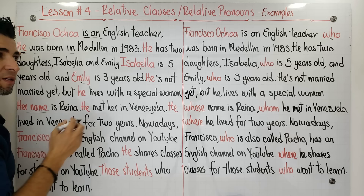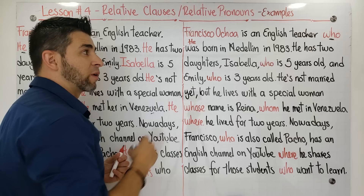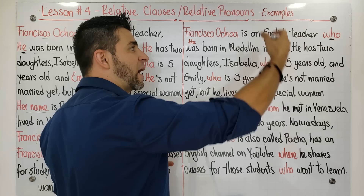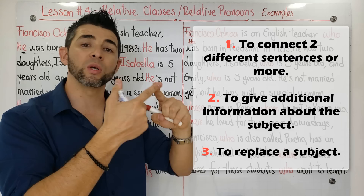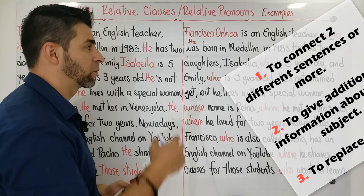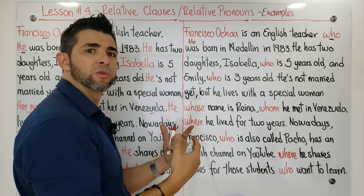In the first version I had the subject pronoun 'he,' but here I don't have it — it's been replaced. When I use the relative pronoun 'who,' it talks about people and helps you do three things: connect two or more sentences, give additional information, or replace a subject. Those are the three things a relative pronoun does.